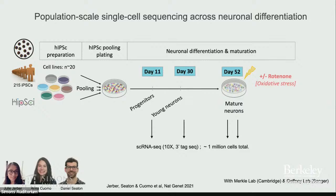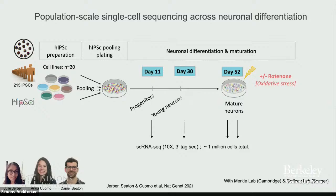We differentiate these pools towards a neuronal fate, collecting cells at day 11, 30, and 52, yielding substantial datasets of around a million cells. Regarding pooling: the demultiplexing is straightforwardly resolved because the lines are genetically diverse. From sparse single-cell SNP data, there are roughly 10,000 variants segregating between any pair of lines, giving more than enough information to assign each cell to its donor.